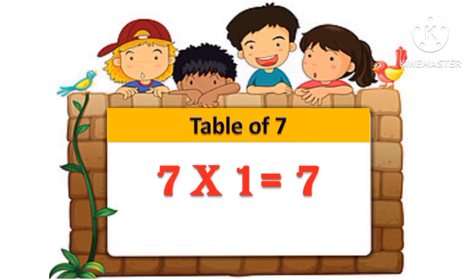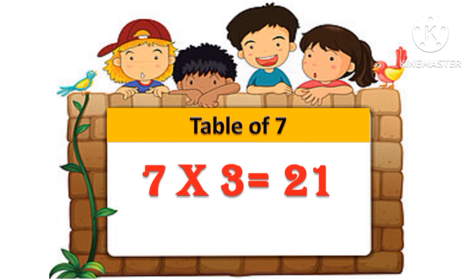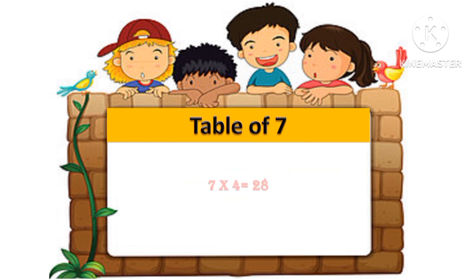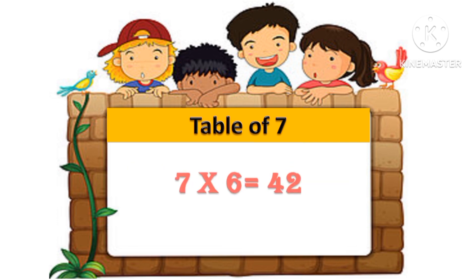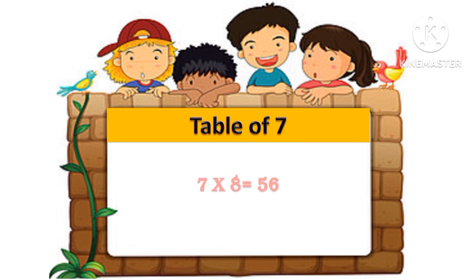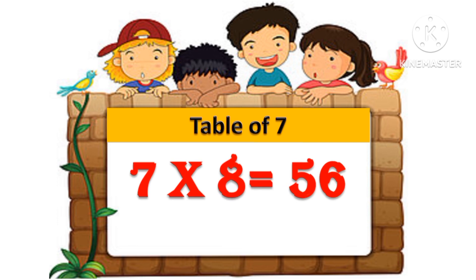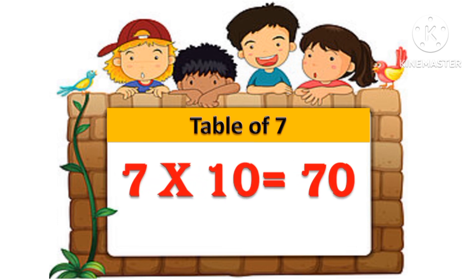Table of 7: 7 one's are 7, 7 two's are 14, 7 three's are 21, 7 four's are 28, 7 five's are 35, 7 six's are 42, 7 seven's are 49, 7 eight's are 56, 7 nine's are 63, 7 ten's are 70.